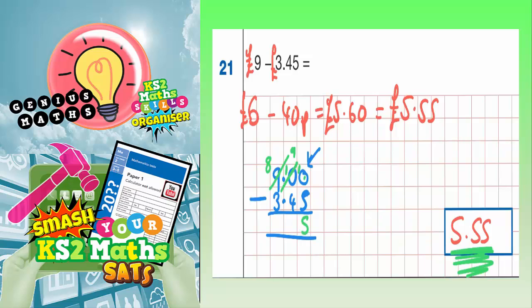10 take away 5 is 5, 9 take away 4 is 5 and 8 take away 3 is also 5. Don't forget to put your decimal point in. So we've got 5.55 again using a column method, which is exactly the same answer as the mental method that we use with money.